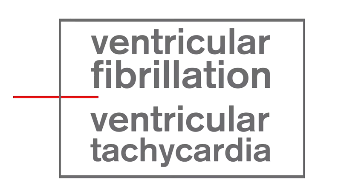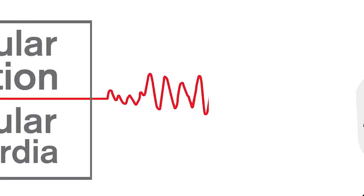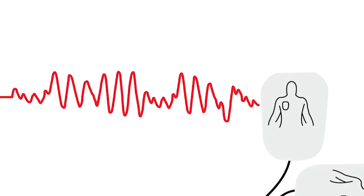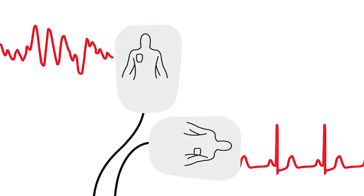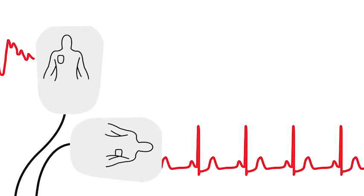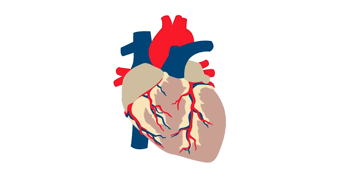Two abnormal heart rhythms in particular, ventricular fibrillation and ventricular tachycardia, can often be corrected by defibrillation, the electrical shock delivered by an AED. When effective, the shock disrupts the abnormal electrical activity long enough to allow the heart to spontaneously develop an effective rhythm on its own.